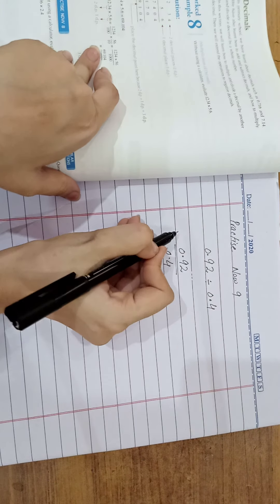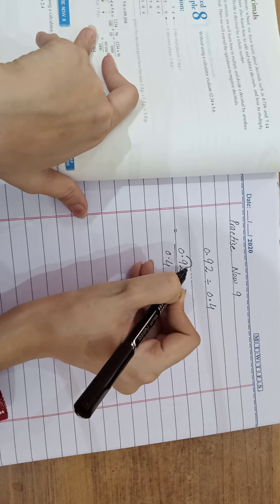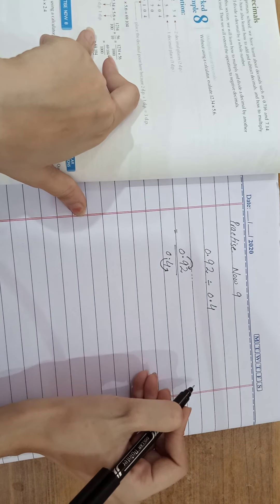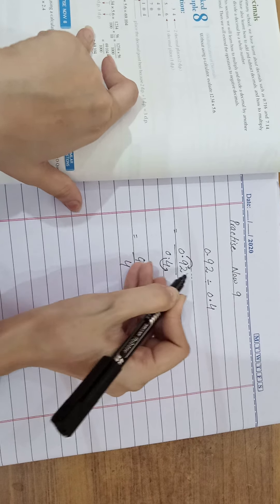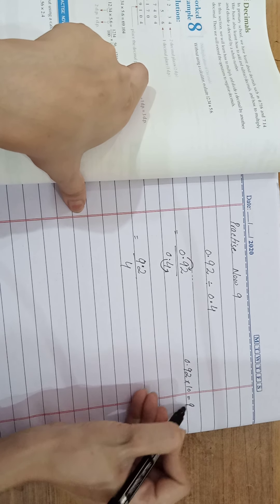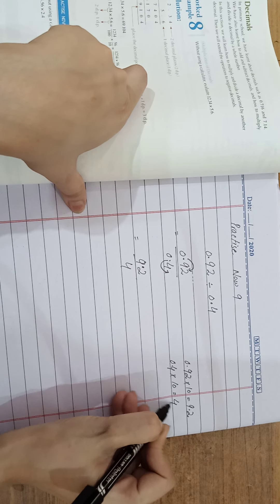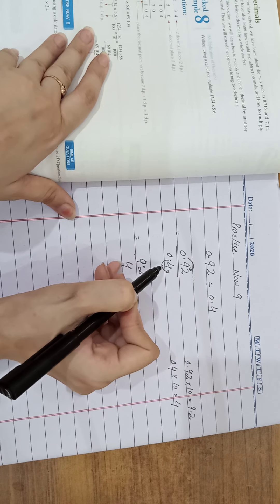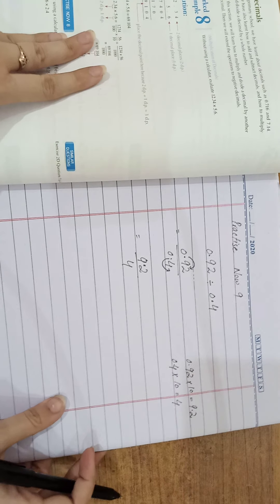Now, we should simplify it to divide it easily. So, when we shift the point here, we can shift the point also here. It means that we are going to multiply with 10. It means 9.2 by 4. How we shift the point? It is 0.92 multiplied by 10 is equal to 9.2. And 0.4 multiplied by 10 is equal to 4. Clear? So, it means that we multiply both values, numerator and the denominator with 10. And the fraction form will be 9.2 divided by 4.